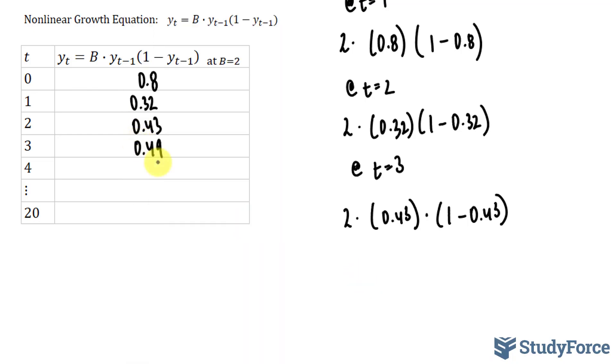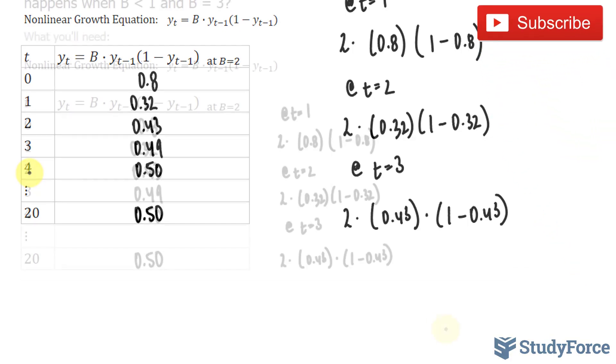I'm going to fill in what happens at 4 and 20. So I've gone ahead and filled out what happens at 4 and 20, and it turns out that any number that you choose for t between 4 and 20 will be 0.50.